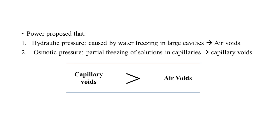Powers' theory proposes two types of pressure acting on concrete. One is hydraulic pressure, caused by the freezing of water in large cavities such as air voids. The other is osmotic pressure, caused by partial freezing of solution in the capillary voids. Normally in concrete, capillary voids are much more numerous than air voids.